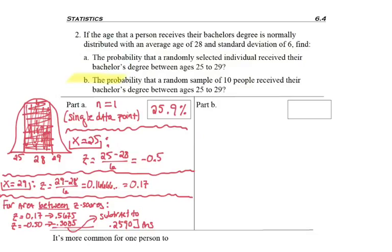Now on to part B. This one asks the probability that a randomly selected sample of 10 people, so not one person but this group, received their bachelor's degree between 25 and 29. Now it doesn't say average, but that a sample of 10 kind of implies that we're referring to an average.